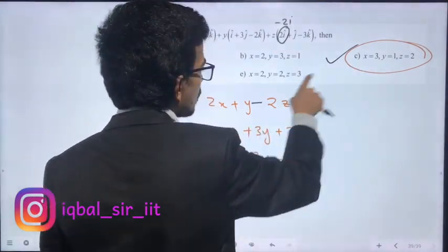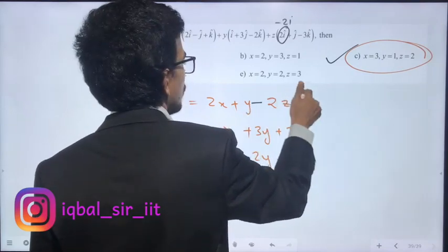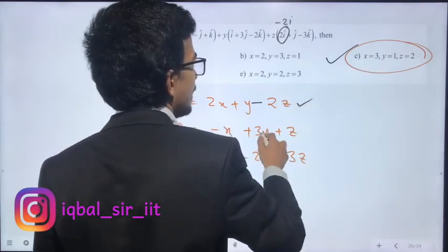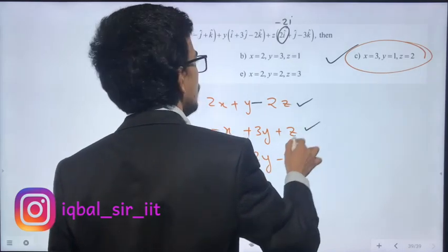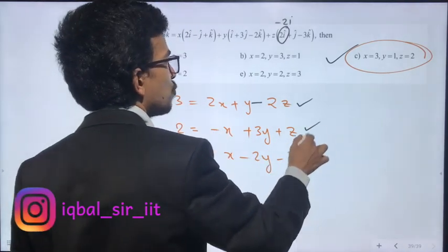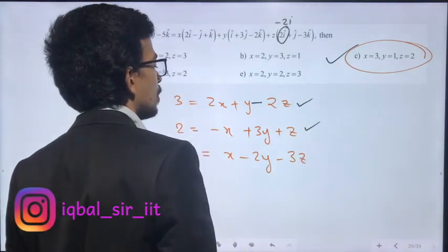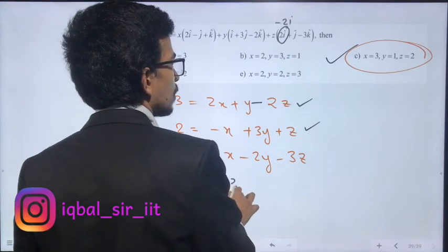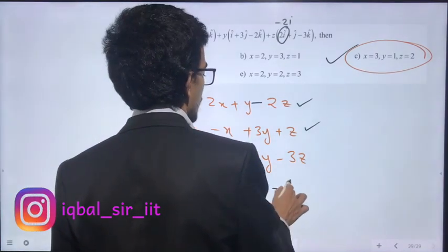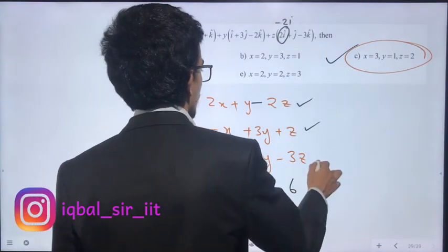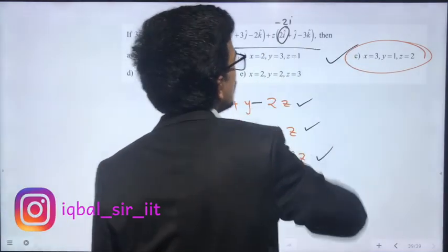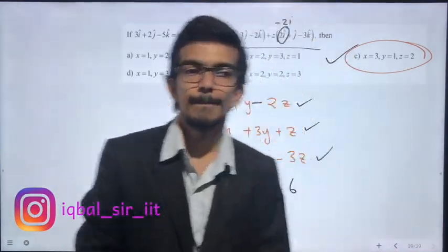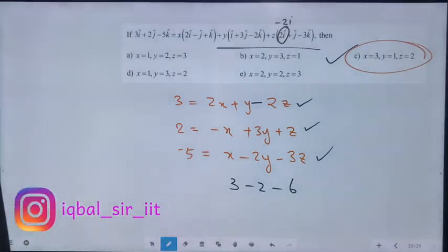Verifying: 6 + 1 = 7, then 7 minus 4 = 3. Check: minus 3 plus 3 = correct. And 3 minus 2 minus 6 = minus 5. Yes, matches the original equations. Answer is confirmed as C.